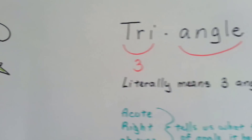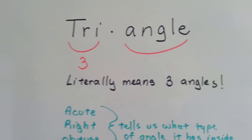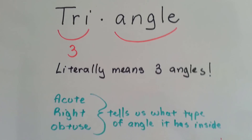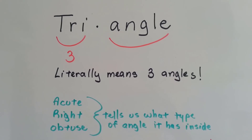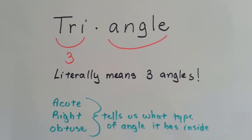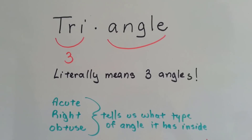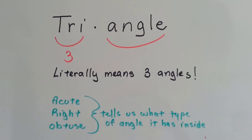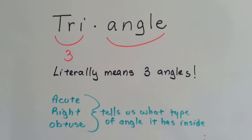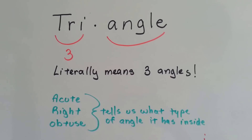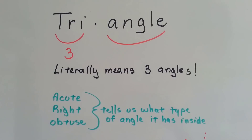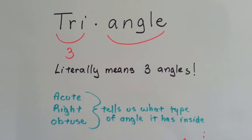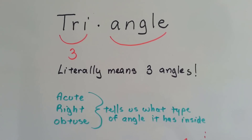The word triangle literally means three angles. Tri is a prefix meaning three, like a tricycle has three wheels. The names acute, right, or obtuse for a triangle tell us what type of angle it has inside.